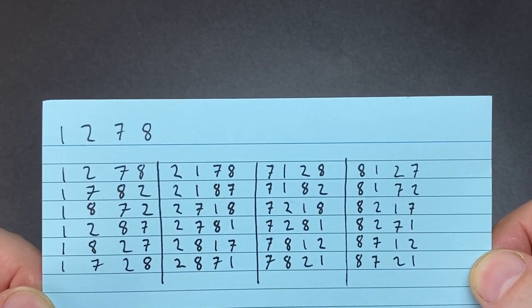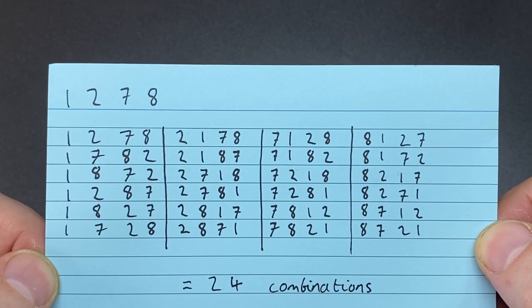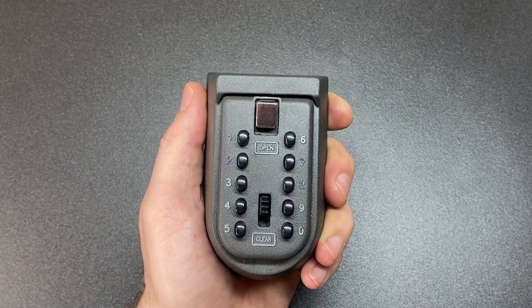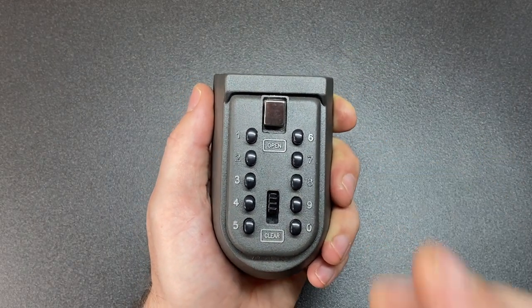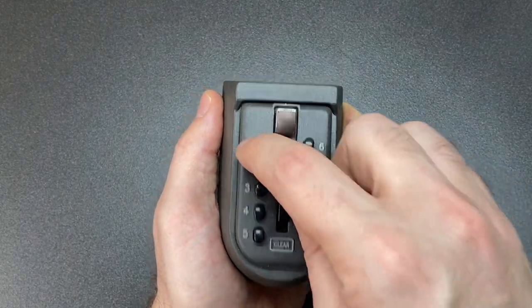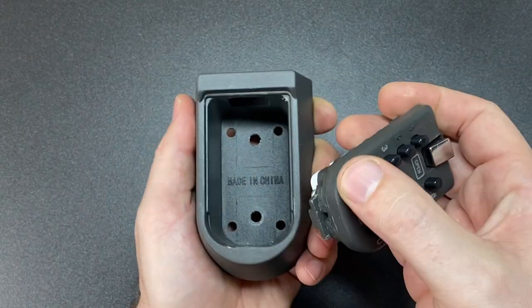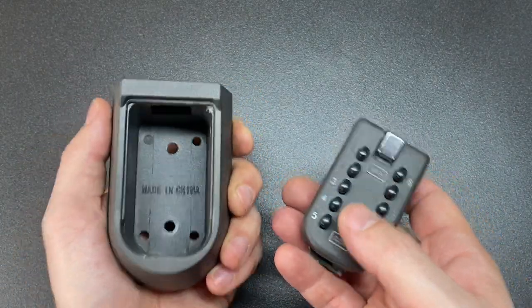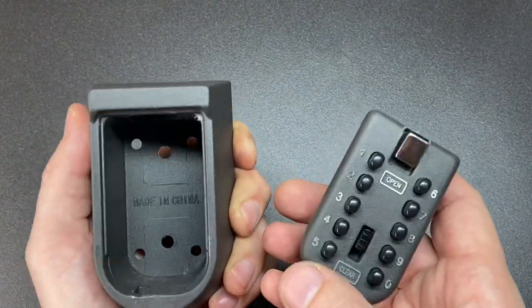And I've actually written them down here. So for numbers one, two, seven, and eight, we have 24 combinations. So for this particular model, you wouldn't need to have a particular combination. You just have to hit the buttons in any order to get the open, but a lot of electronic locks and some mechanical locks do need an exact set of figures.